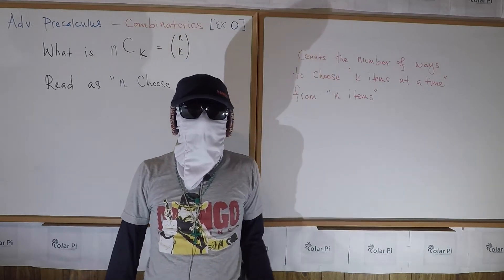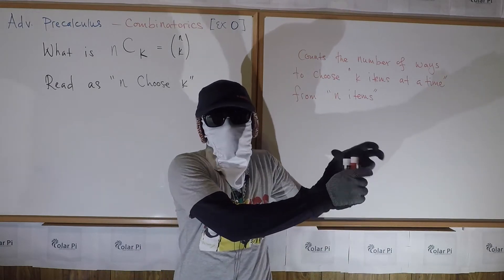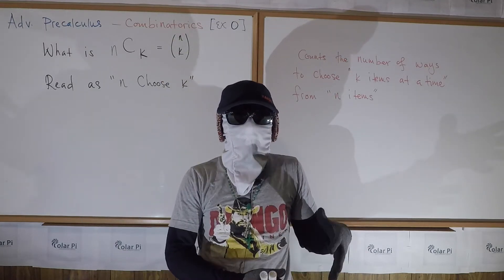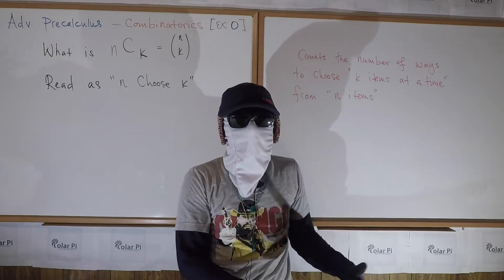Basically, all it does is like, let's say you have 20 of something and you want to choose five at a time - there are different combinations of five at a time that you can choose from 20. What n choose k does is it counts the number of different ways to choose five at a time from 20. The example of 20 choose 5.